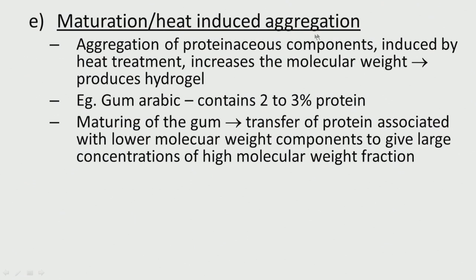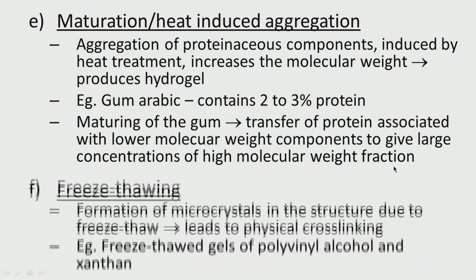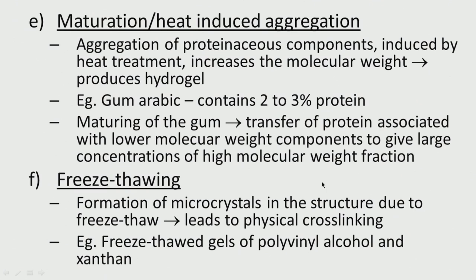Maturation or heat-induced aggregation involves aggregation of proteinaceous components induced by heat treatment, which increases the molecular weight to produce a hydrogel. For example, gum arabic contains 2 to 3 percent protein; maturation of the gum transfers protein associated with lower molecular weight components to give large concentrations of high molecular weight material. Freeze-thawing is another method — when we freeze and thaw a polymer, formation of microcrystals in the structure due to the freeze-thaw cycle leads to physical cross-linking. Freeze-thaw gels of polyvinyl alcohol and xanthan are examples.